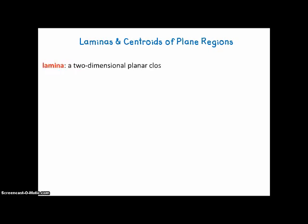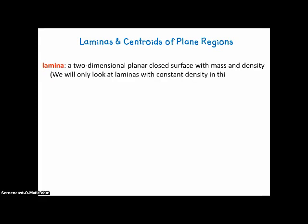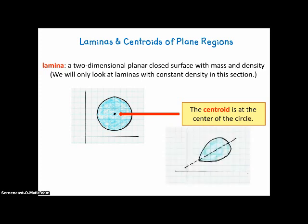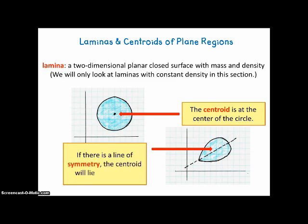A lamina is a two-dimensional planar closed surface with mass and density. In this section, we're only going to look at laminas with constant density — variable density will be covered later. If we have a lamina shaped like a circle, the centroid is obviously at the center. For a petal-shaped lamina with a line of symmetry, the centroid will lie on that line of symmetry, and it will move a little bit towards the fatter end of the lamina.